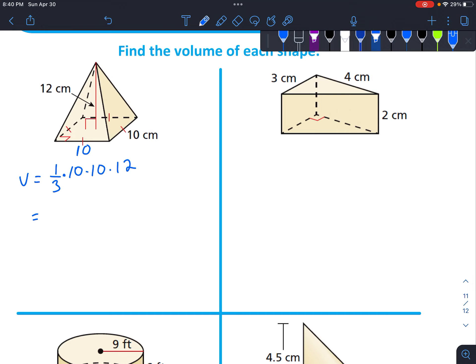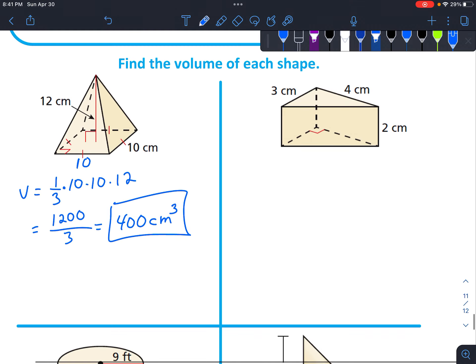So 10 times 10 times 12 equals 1200 divided by 3. That's going to equal 400 centimeters cubed. It's called cubed because this time it has three dimensions instead of just two for area.